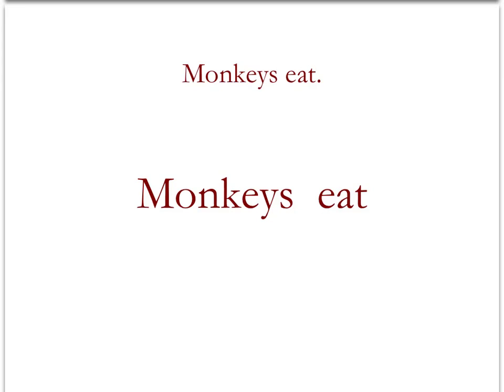Let's start out with a basic sentence. This sentence is 'monkeys eat.' Monkeys is the subject and eat is the verb. So we take the subject, monkeys, and the verb, eat, and we place them next to each other and underline them. Then we draw a vertical line that separates the subject from the verb. This vertical line does cross the underline.